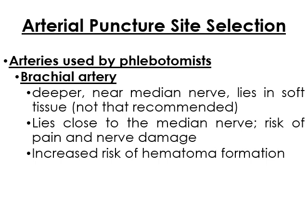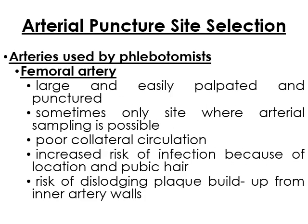There is a greater risk of pain and nerve damage with the brachial artery, and an increased risk of hematoma formation. The femoral artery, on the other hand, is large and easily palpated, and is sometimes the only site where arterial sampling is possible. However, it has poor collateral circulation, increased infection risk because it is near the pubic area, and there is risk of dislodging plaque buildup from the inner artery walls.